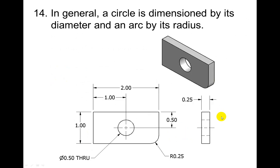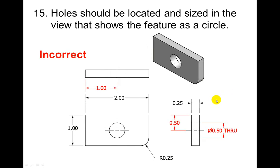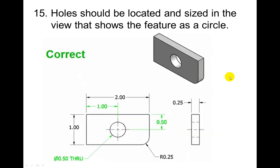In general a circle is dimensioned by its diameter and an arc by its radius. That's what I was just talking about. So this would be correct. Holes should be located and sized in the view that shows the feature as a circle. So this is incorrect, because we do have a circle here that you can have a leader line off of. So this would be the correct way to do it.